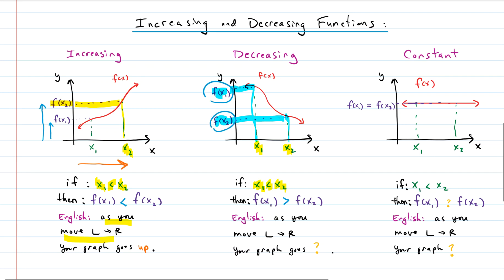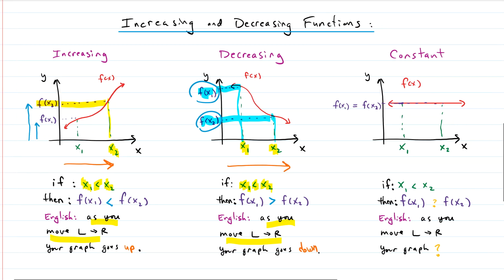In an English version, we would say: as you move from left to right on your graph - so we're moving this way - what happens to the y value or the curve? The graph goes down. As you move from left to right on your graph, the graph goes down.